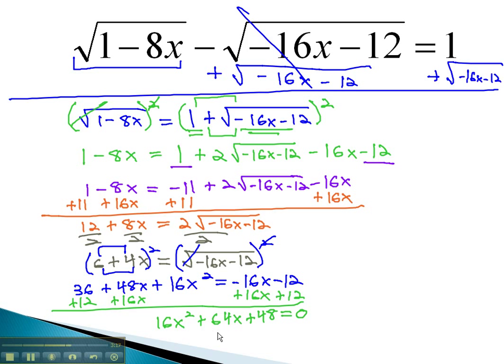We have a common factor of 16. Pulling that out first gives us x squared plus 4x plus 3 equals 0. And finally, factoring what's left to x plus 3 times x plus 1 equals 0.